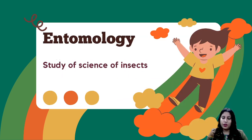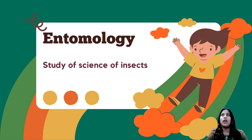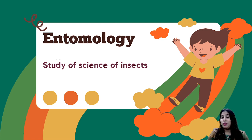First, entomology. Entomology means the study and science of insects. If you study the morphology — morphology meaning shape, size, and body, which includes organs — you can learn about insects. Many things happen involving many organs.